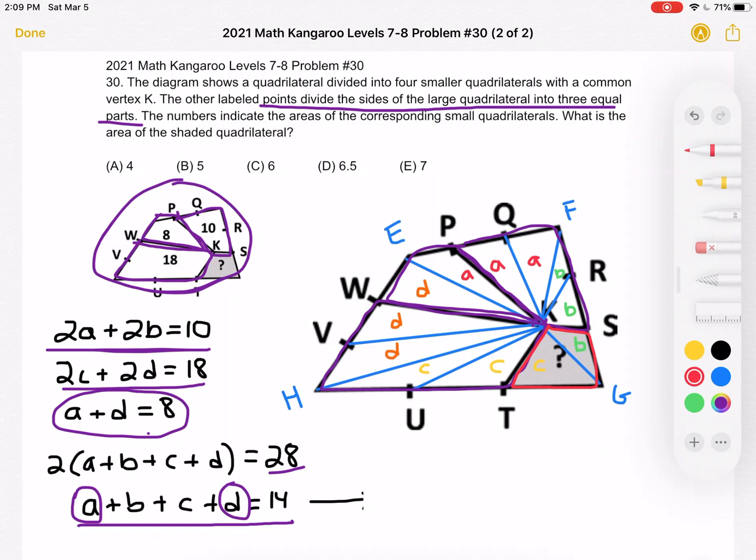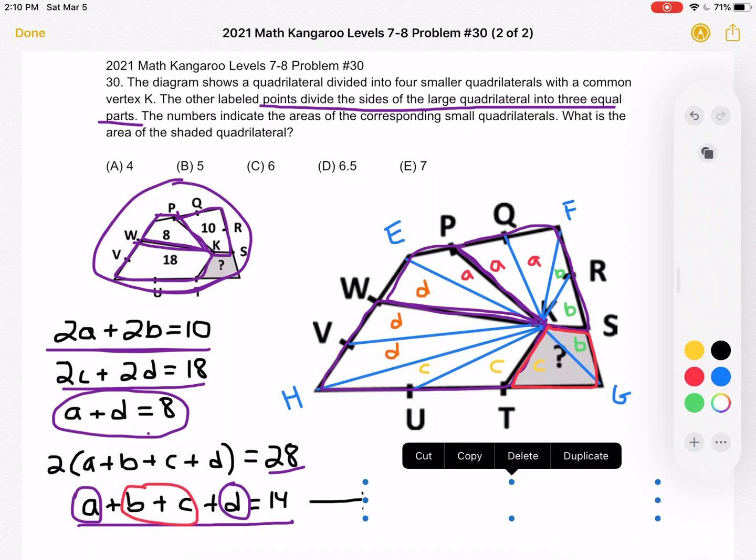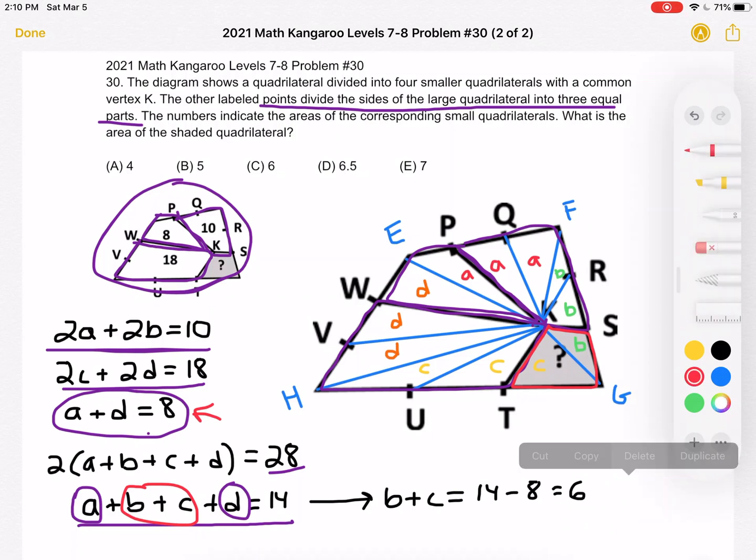So if we remove what A plus D is, then we're left with B plus C. So 14 minus A plus D which is 8 will give us 6. 14 minus 8 is equal to 6. And that is answer choice C.